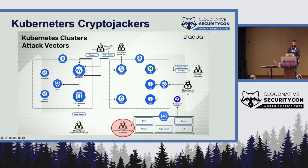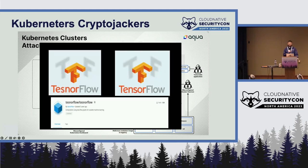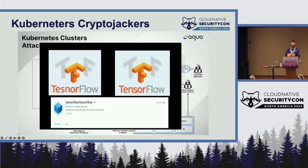The third attack vector is poisoning public registries. Docker Hub is the most famous registry, and we see actors using a technique called typosquatting. They push malicious container images — for example, an actor published a Docker image called 'TensorFlow' (misspelled), which contains a crypto miner, relying on developers misspelling the popular TensorFlow image name. This specific image had more than 1,000 pulls, so the technique is quite effective.